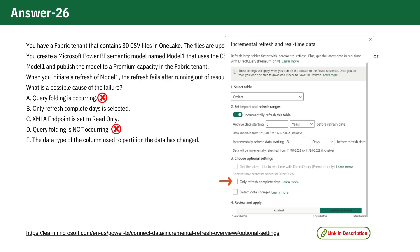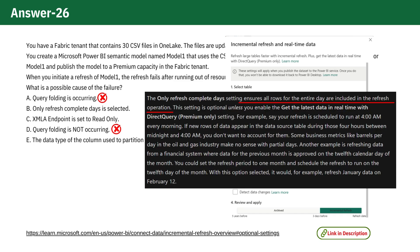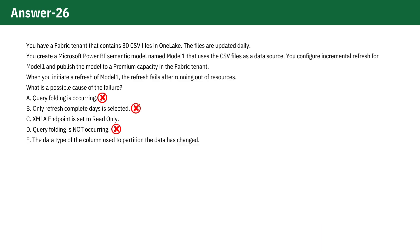Option B: Only refresh complete days is selected. This setting ensures that all rows for an entire day are included in the refresh operation. It does not directly address the issue of running out of resources during the refresh, so this option is incorrect.